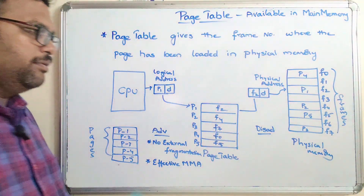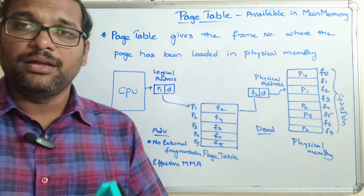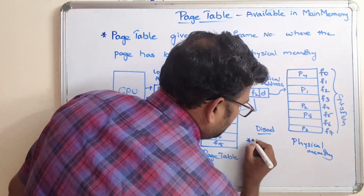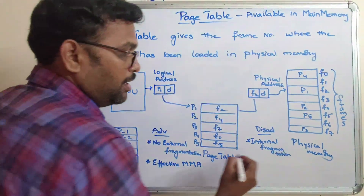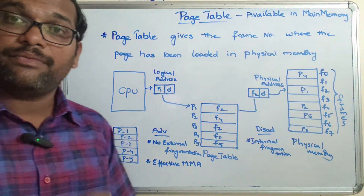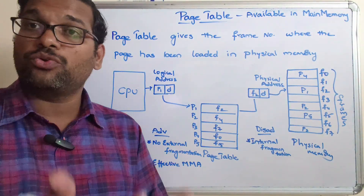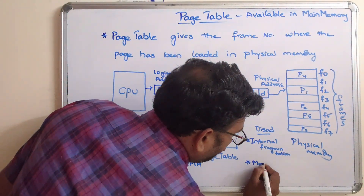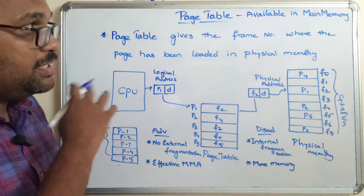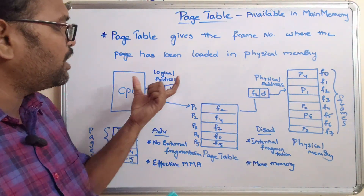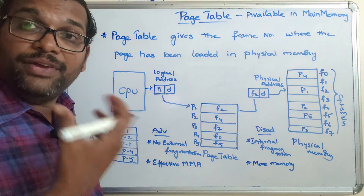There are also some disadvantages. Whenever a page is loaded into a frame, there is a possibility of internal fragmentation. The next disadvantage is that it requires more memory to store different page tables, because every process has its own page table. That is all about the page table — its importance is mainly to convert the logical address to the physical address.